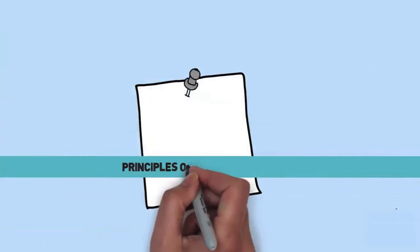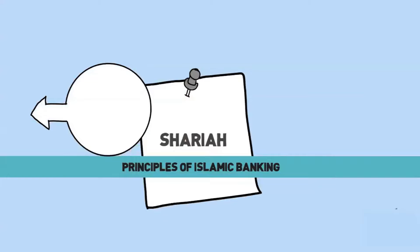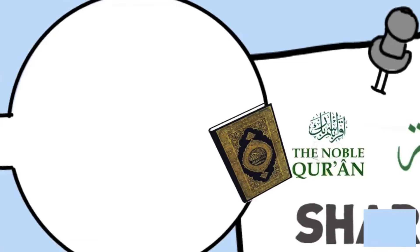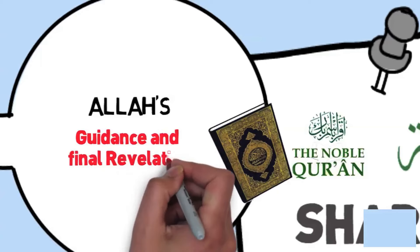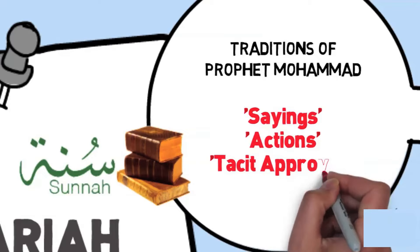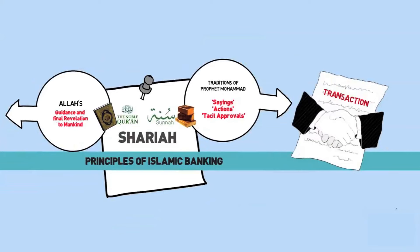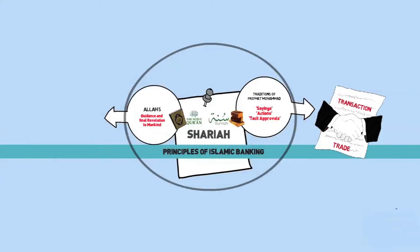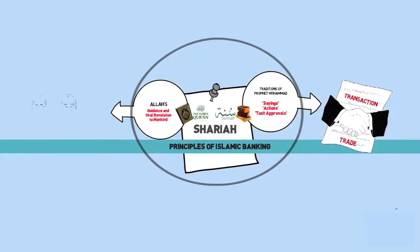Let us now understand the principles on which Islamic banks work. In Islamic law, which is called Sharia, there are two primary sources: the Qur'an and the Sunnah. The Qur'an is a divine book and word of Allah revealed as a final revelation and guidance to mankind. The Sunnah refers to the traditions of Prophet Muhammad, peace be upon him, that include his sayings, actions, and tacit approvals. The basic principles related to business transactions and trade can be interpreted based on the circumstances, provided such interpretation does not contradict the Qur'an and the Sunnah. This unique flexibility of Islam makes it relevant to every generation.